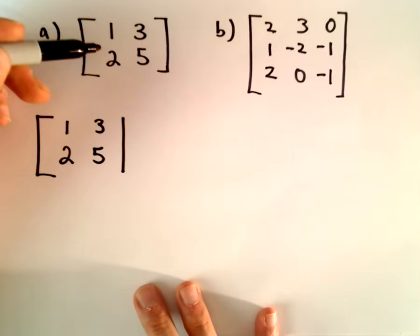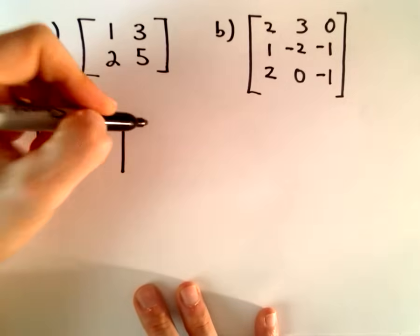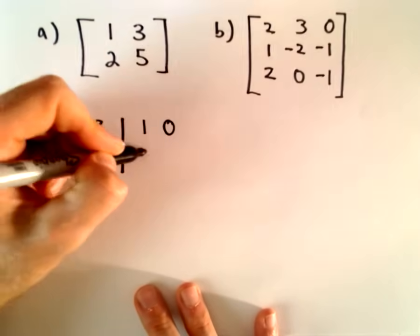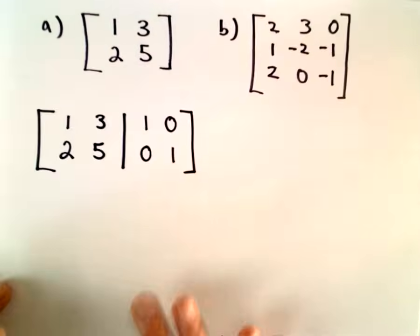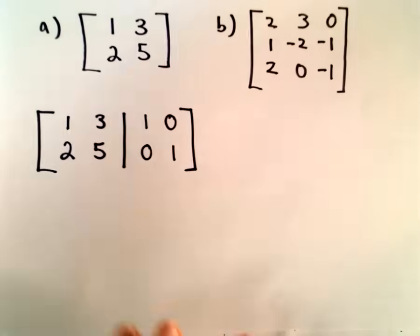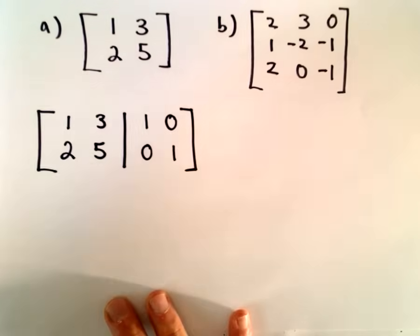Okay, so there's my original matrix. Entries 1, 3, 2, 5. On the right side, I'm going to put the 2x2 identity matrix. And, again, my goal now is on the left side, I want to make the identity matrix appear.